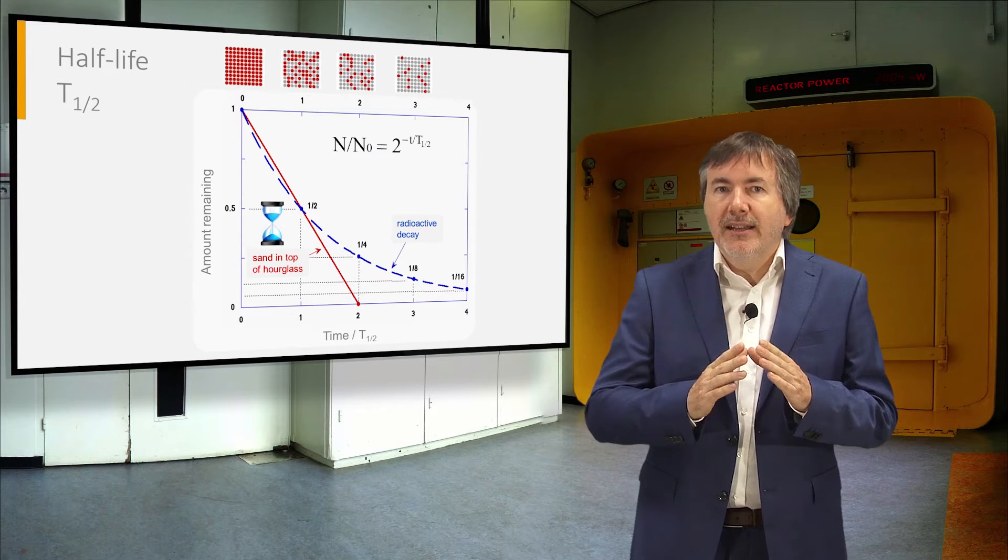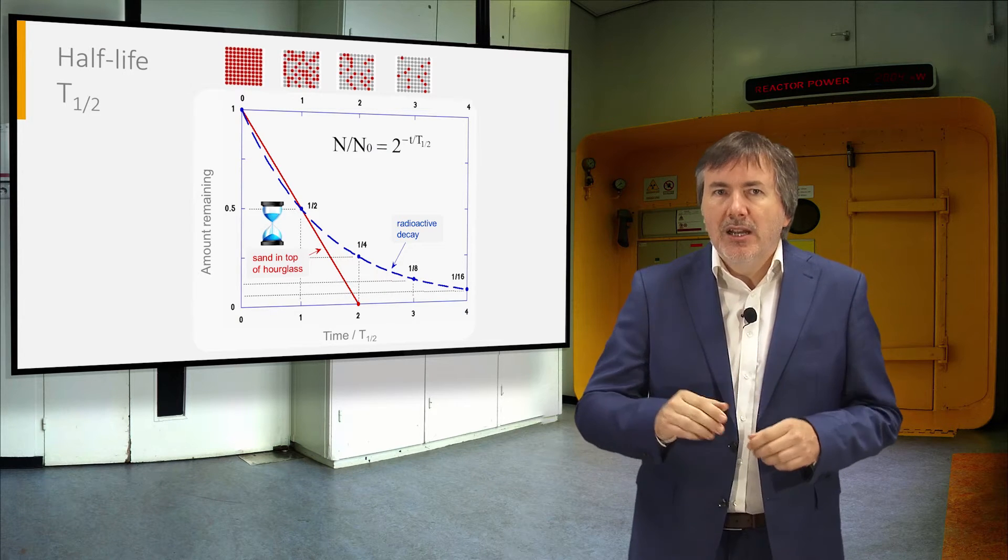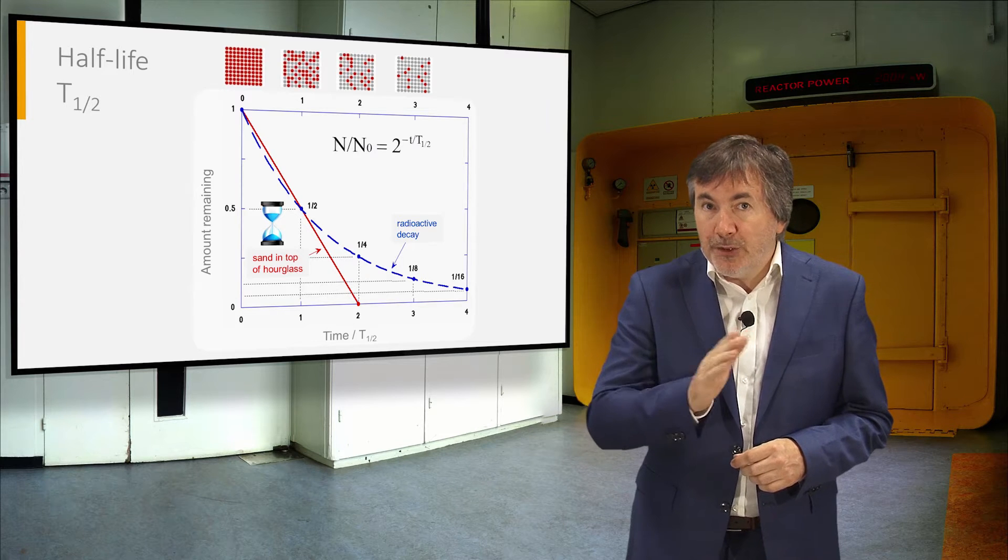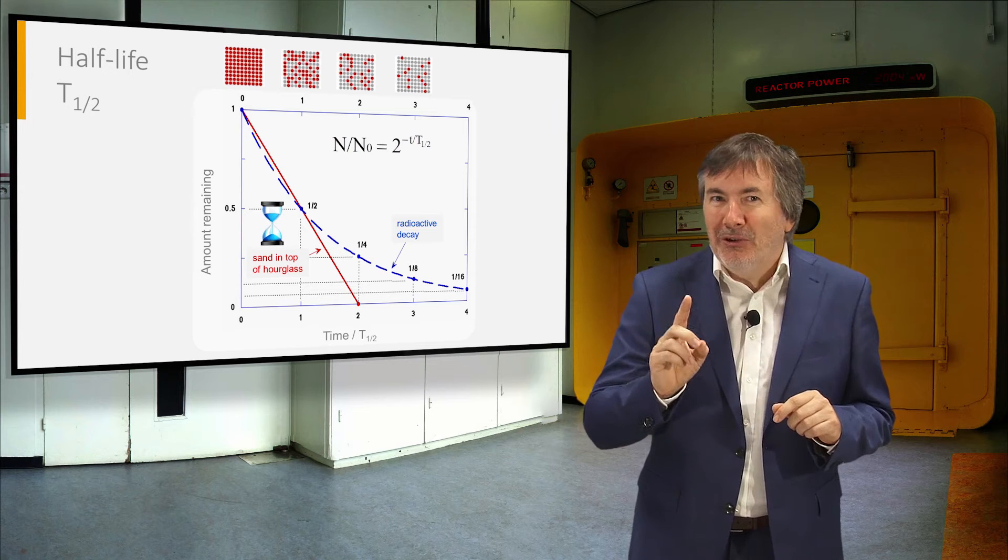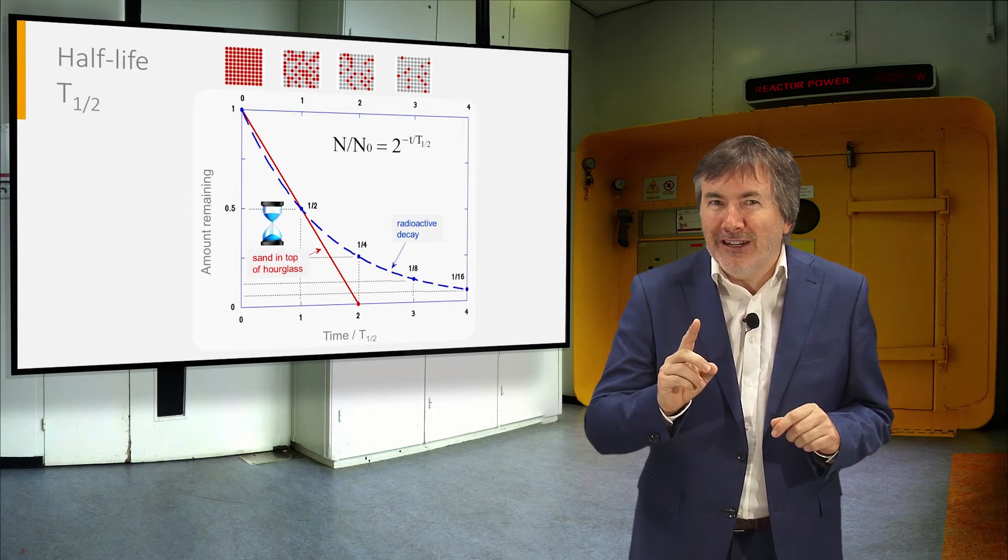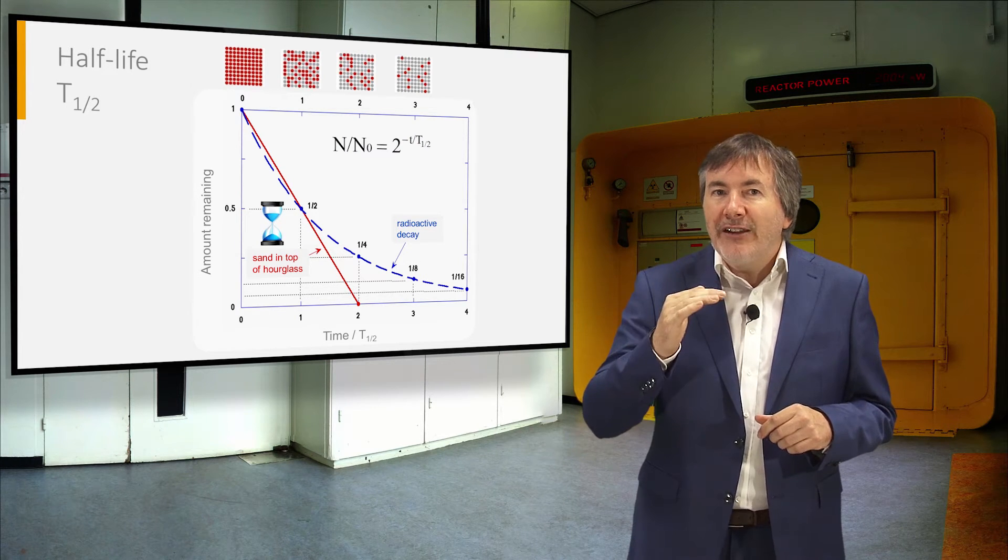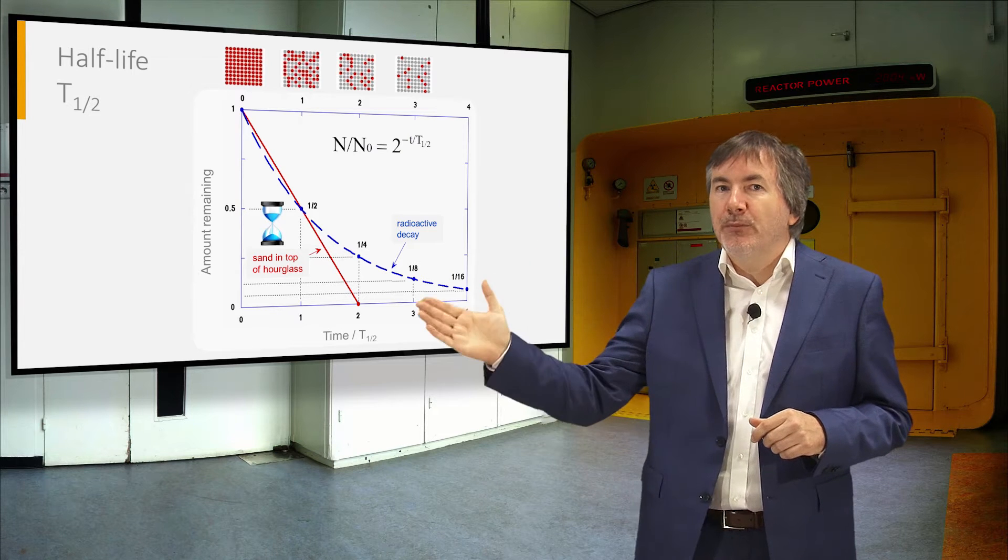Each radionuclide has its own half-life, by which half of the atoms are expected to decay. Unlike with an hourglass, it is not so that all atoms are decayed after two half-lives. The number of surviving atoms follows an exponential curve.